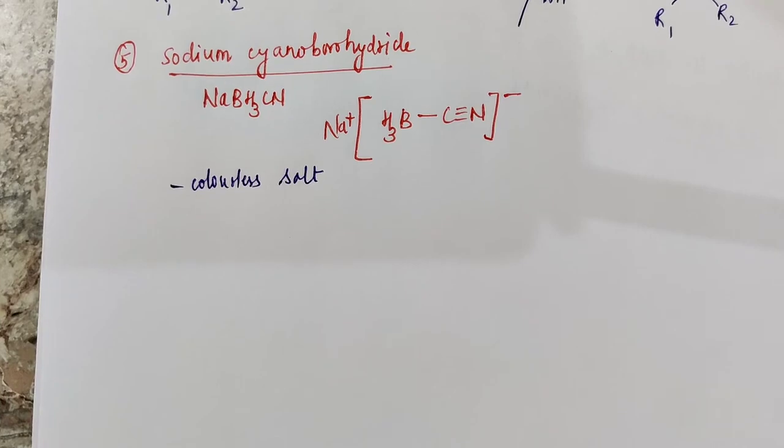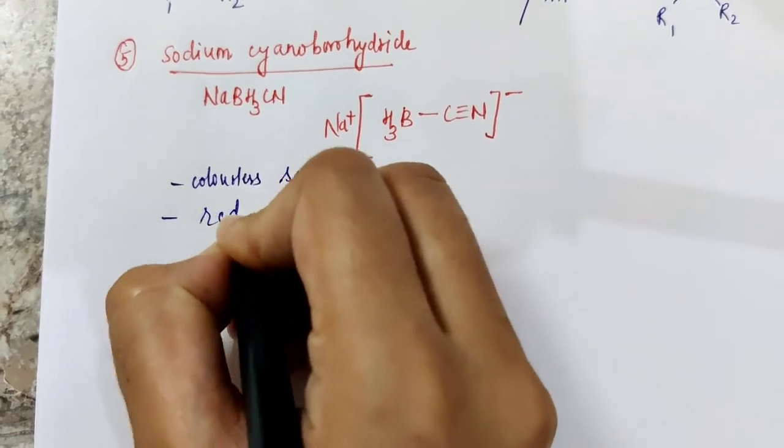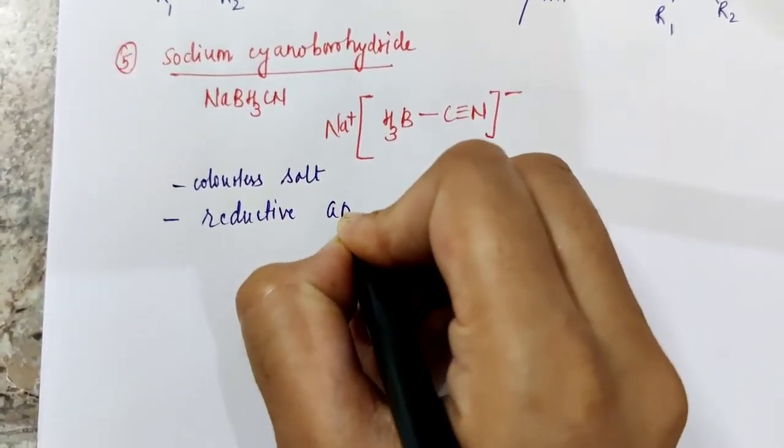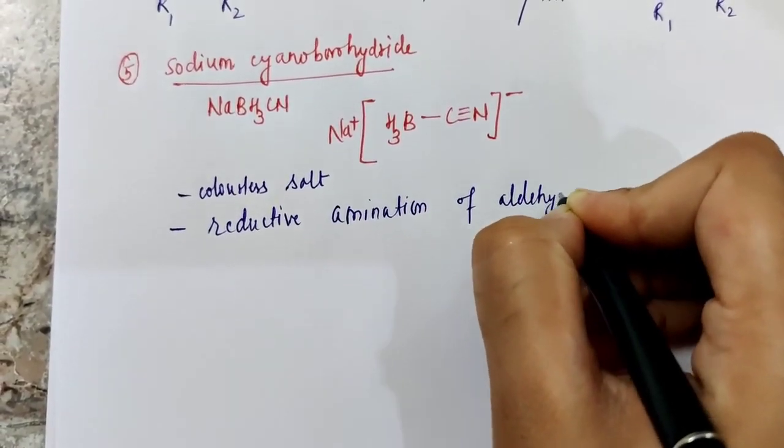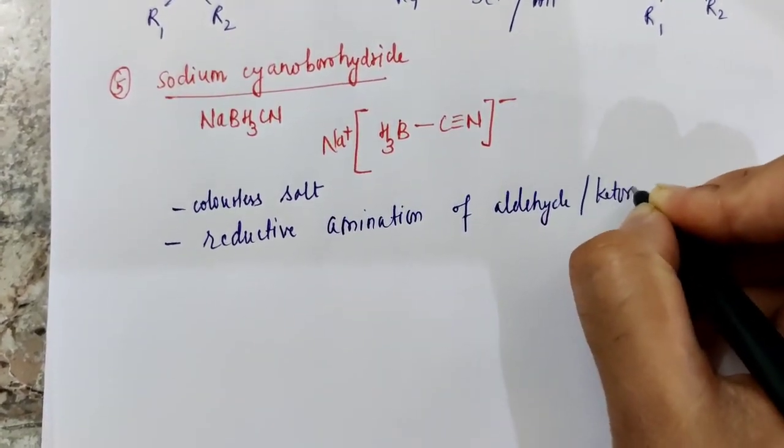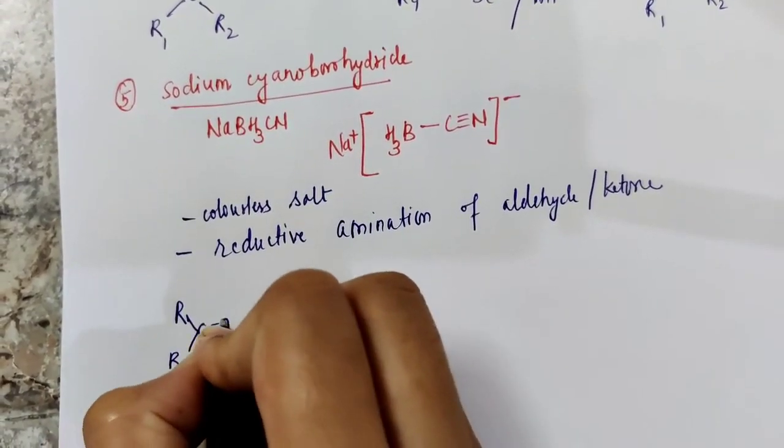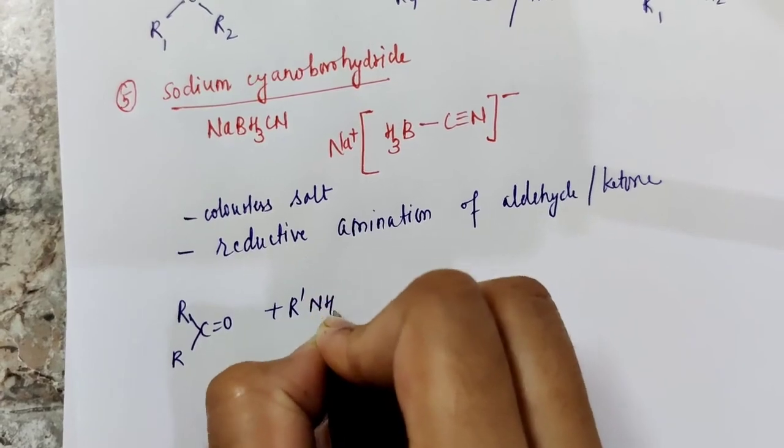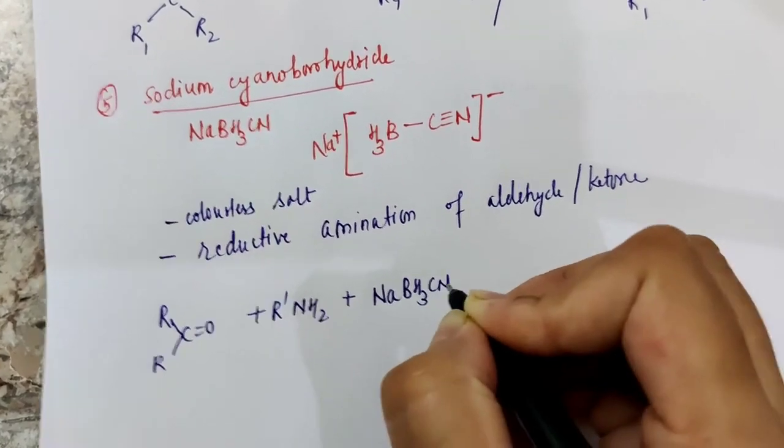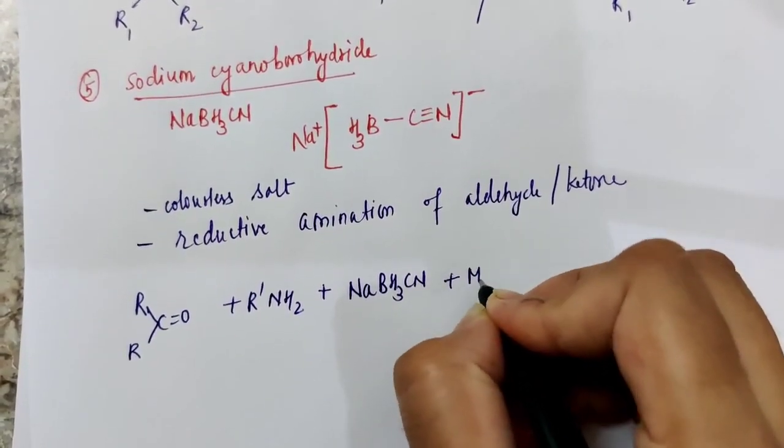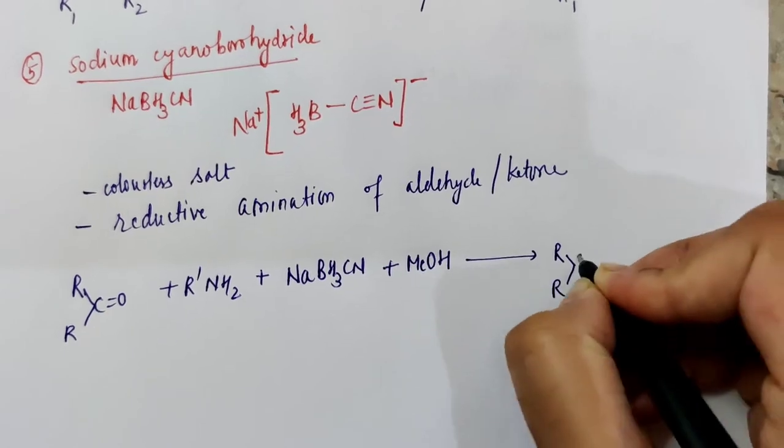For reductive amination, carbonyl compound is treated with amine along with this reagent sodium cyanoborohydride in presence of a solvent. Here we are taking methanol and reductive aminated product is obtained.